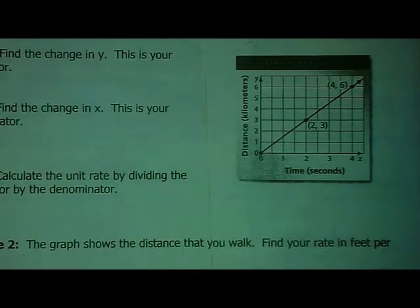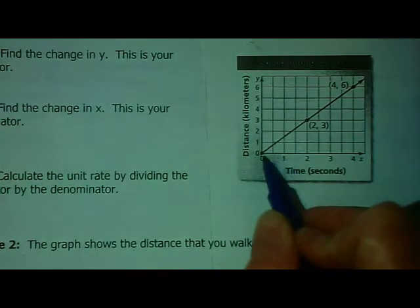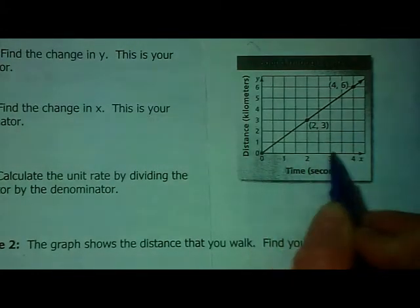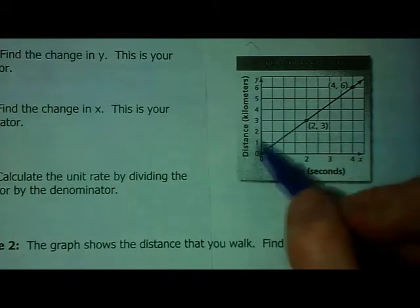Right here we have our time, and notice number scales are a really important thing to look at on a graph. Each one of these lines doesn't mean one—this means one half. So our number scale down here is kind of skipping a space, but I'm really counting by a half. On my distance we are counting by ones.